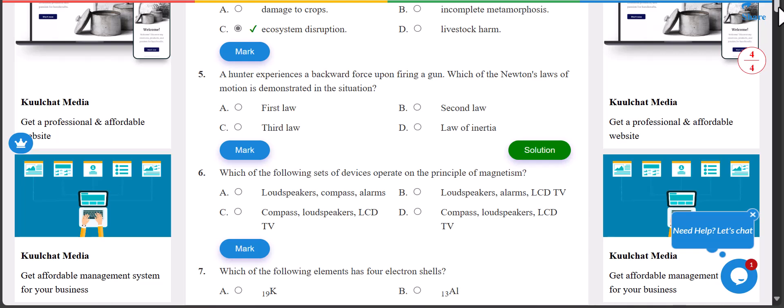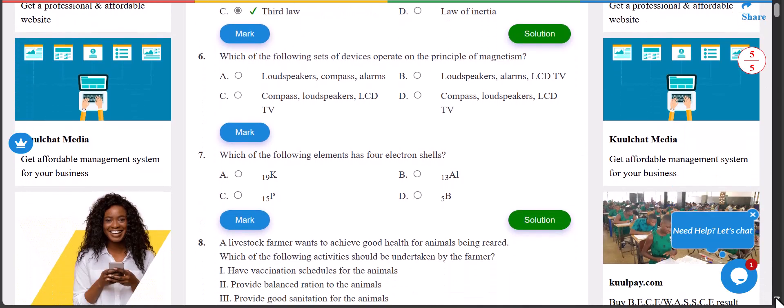Number five: a hunter experiences backward force upon firing a gun. Which of Newton's laws of motion is demonstrated in this situation? The answer is C, that is the third law.